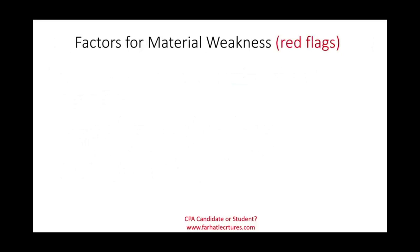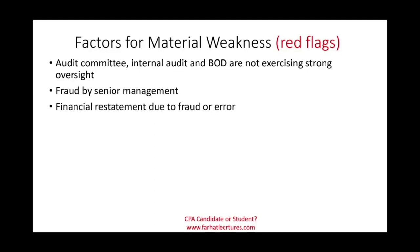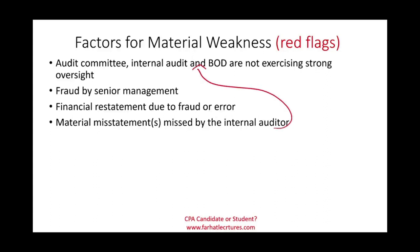Certain factors are considered red flags and are treated as material weakness indicators. These include: people in charge of governance, such as the audit committee, internal control, or board of directors, not exercising strong oversight; any fraud conducted by senior management; any financial restatement due to fraud or error; and any material misstatement missed by the internal auditor — which also points back to a failure in oversight.